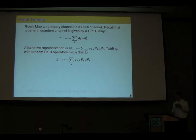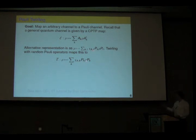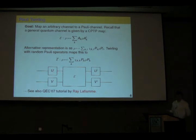Here we do something even simpler: Pauli twirling — applying local Pauli operations to our channel. What you do is apply a random local operation, let the channel evolve, and then undo the exactly same operation. By doing that you map your channel to an average channel which is indeed a Pauli channel — there are no mixed terms anymore. People have been doing this in NMR experiments, and now they think about doing it in other systems as well.